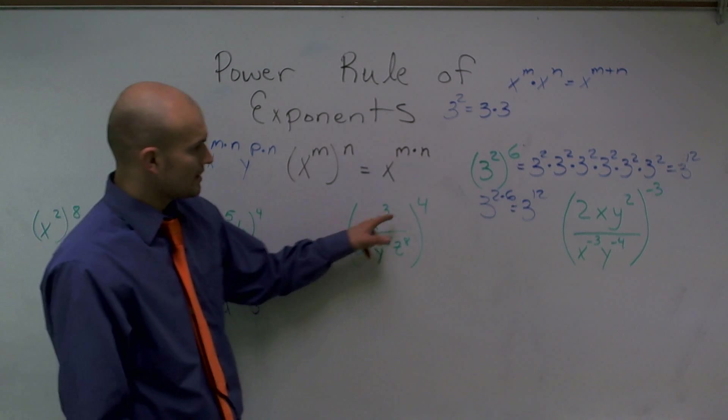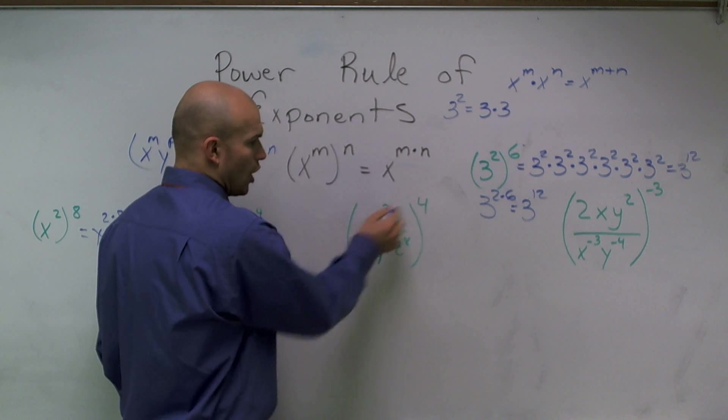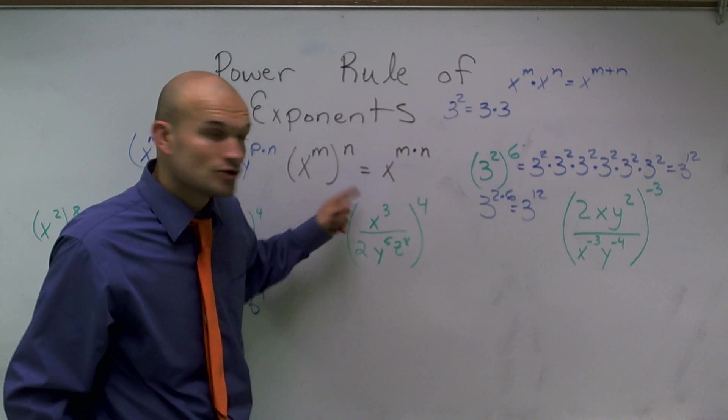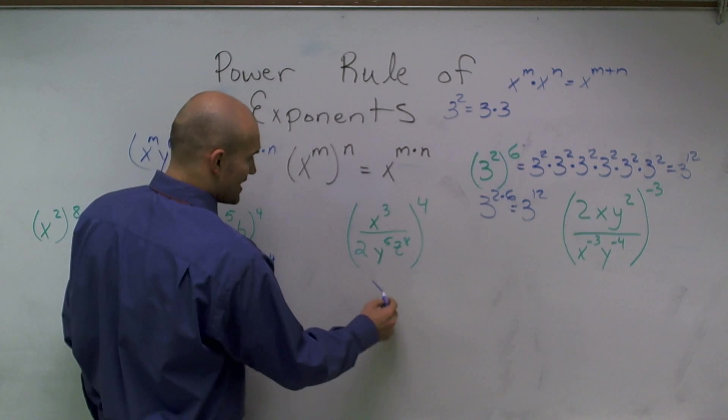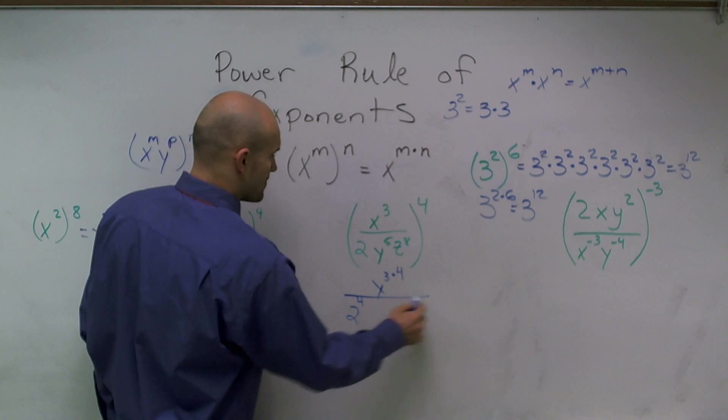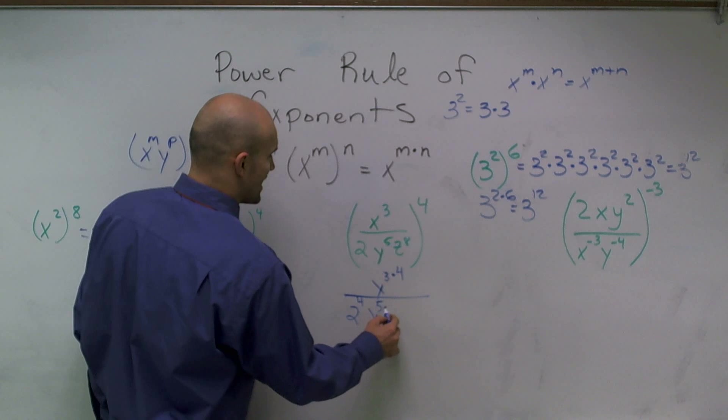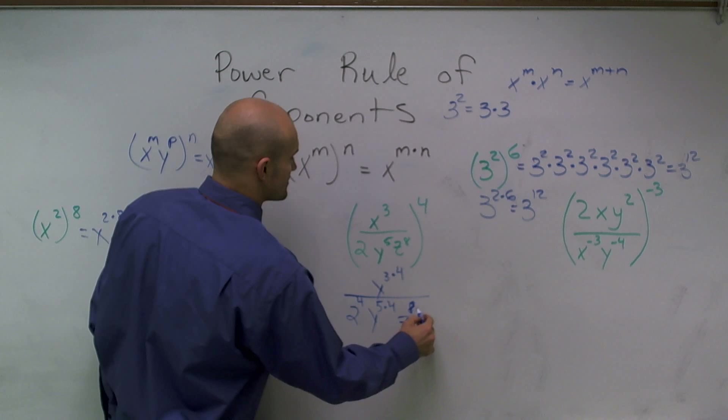Next one. Remember our distributive property. We've got to distribute this exponent to all of my terms. I don't care if it's in the numerator or it's in the denominator. You've got to make sure you distribute. So I have x to the 3 times 4, 2 to the 4th power, y to the 5 times 4, and z to the 8 times 4.